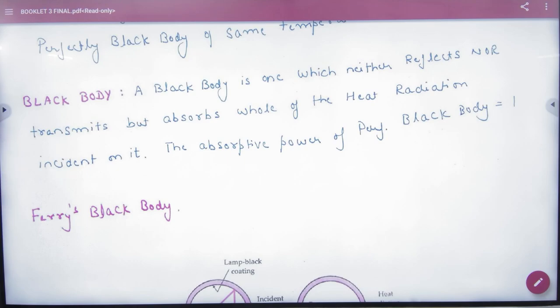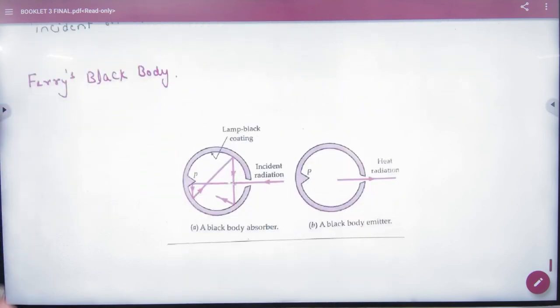But it doesn't exist, I have told. It is just imaginary. A scientist whose name was Ferry said that I will make a perfectly black body. It is not possible to make a perfect one, but Ferry has made it 98% accurately.